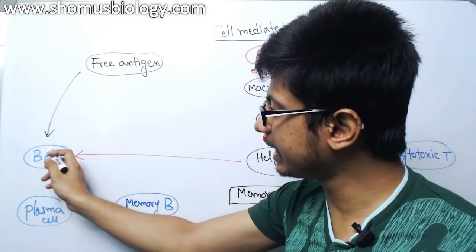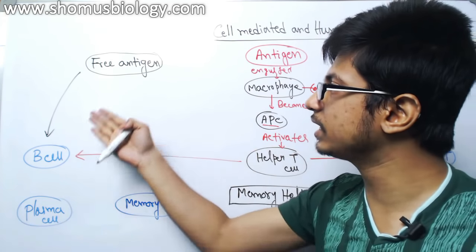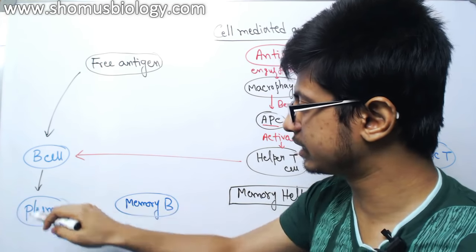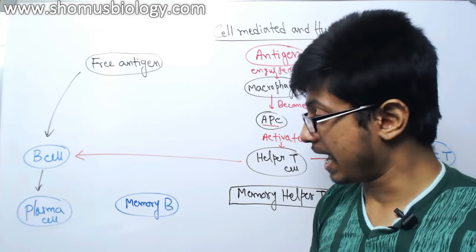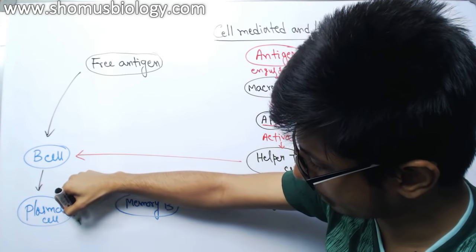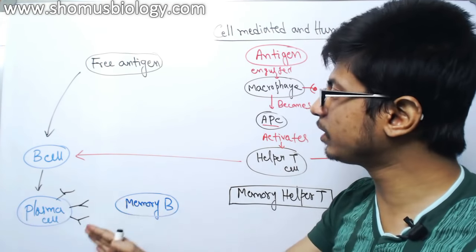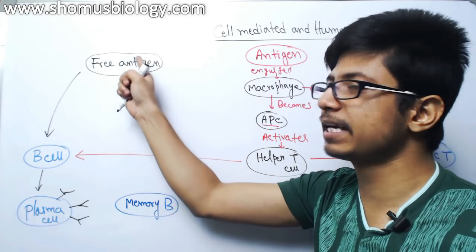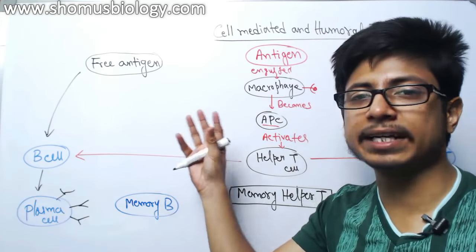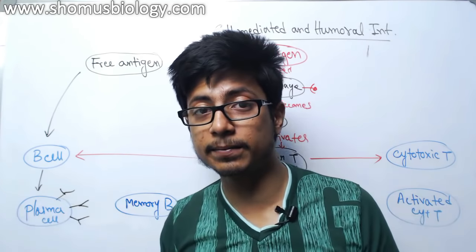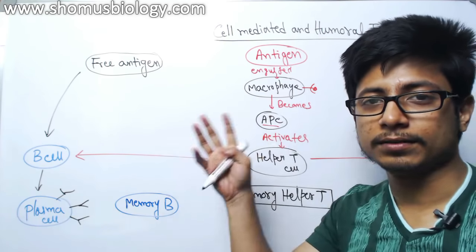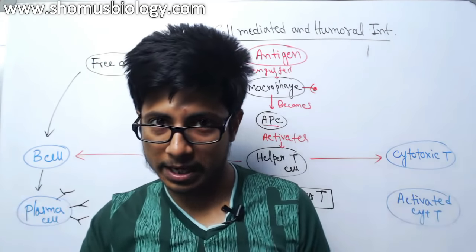Once the B cell gets activated by either the helper T cell or the free antigen, this B cell can turn itself into a plasma cell. The plasma cell will start producing antibodies that are very specific against that antigen. The antibodies will attach to the antigen and further target it to be killed by the complement system, or target it to be killed by macrophages or any other phagocytic cells.